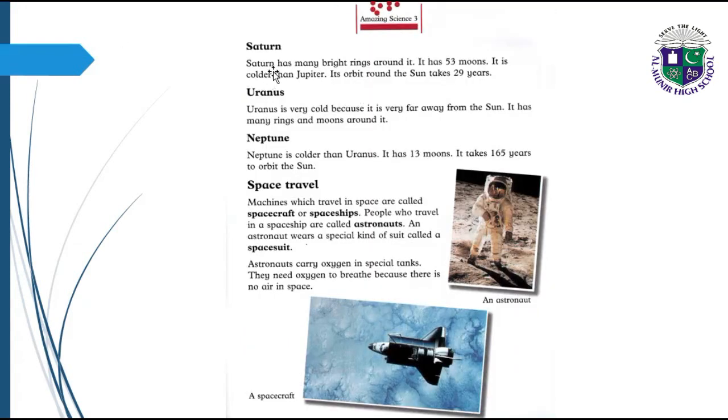Saturn has many bright rings around it. It has 53 moons. It is colder than Jupiter. Its orbit around the Sun takes 29 years. Uranus is very cold because it is very far from the Sun. It has many rings and moons around it. Neptune is colder than Uranus. It has 13 moons. It takes 165 years to orbit around the Sun.